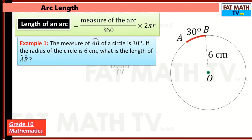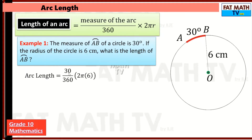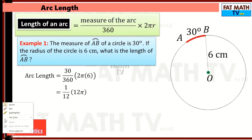Example: the measure of arc AB of a circle is 30 degrees. If the radius of the circle is 6 centimeters, what is the length of arc AB? Just plug into the formula. The measure of the arc is 30, so that's 30 over 360 times 2πr. r is 6, so that's 2π times 6.